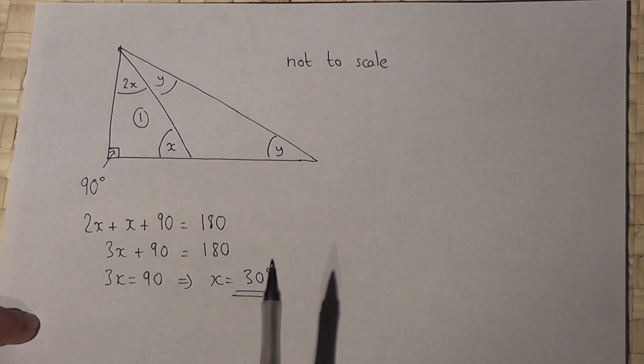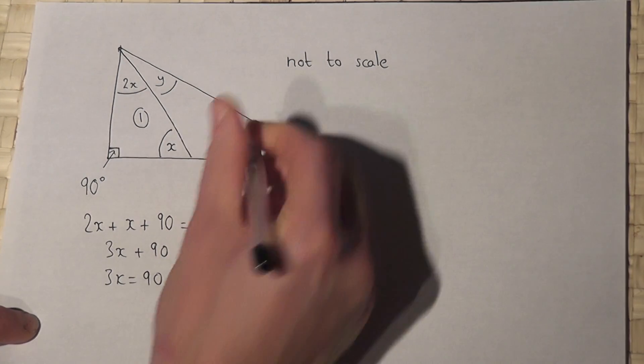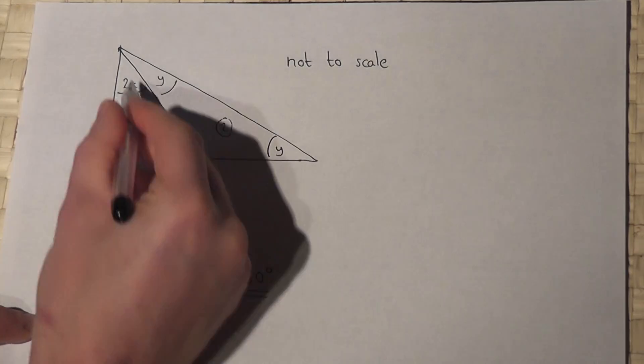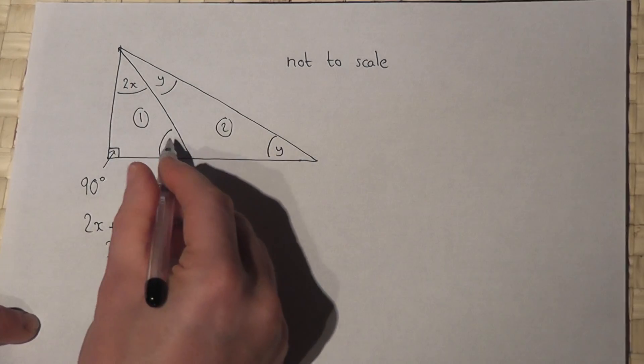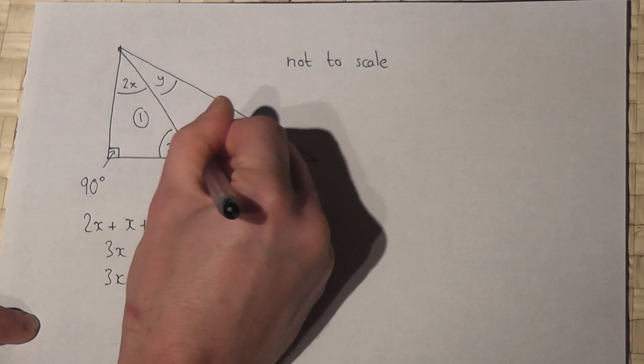Now part two says find the size of angle y. To do this, I consider triangle two, which is this one here. If x is 30, then this angle here on the straight line must equal 150 degrees because 150 plus 30 is 180.